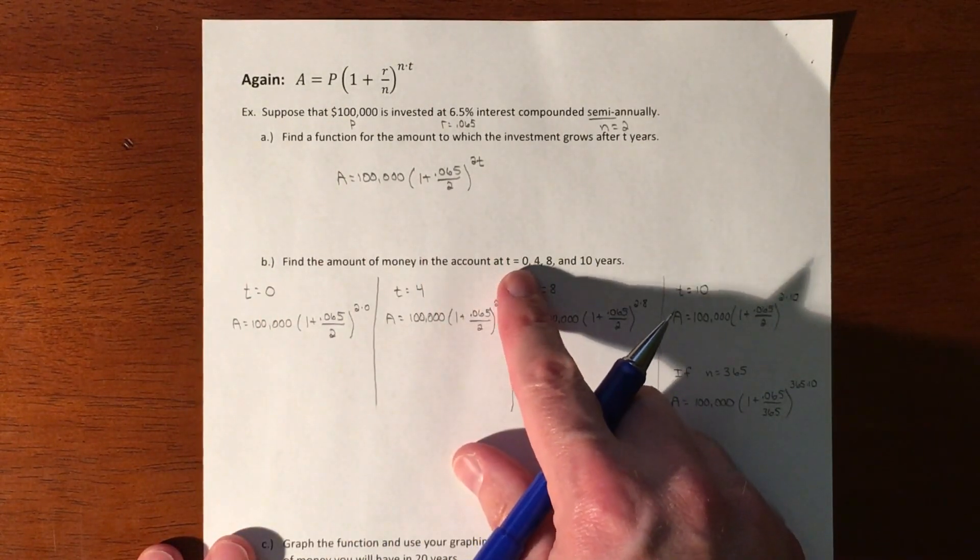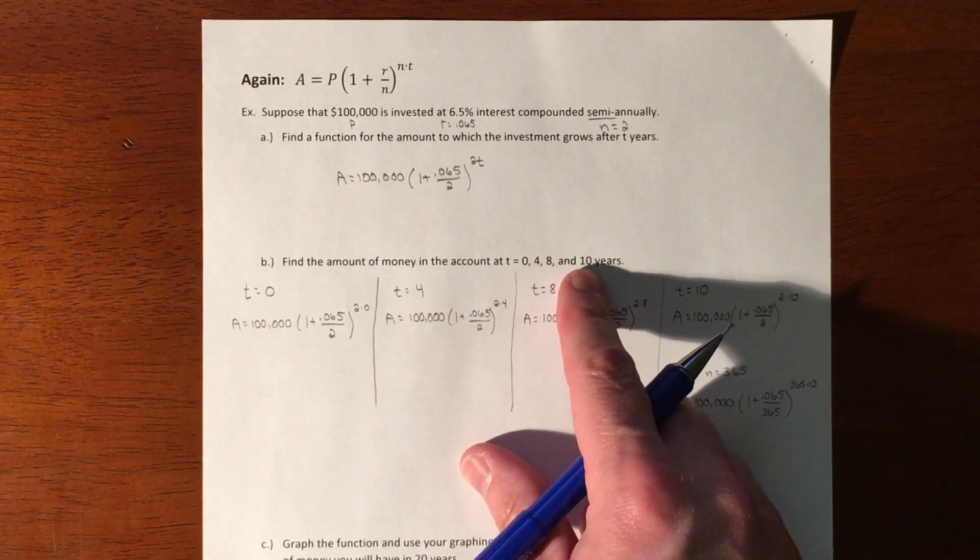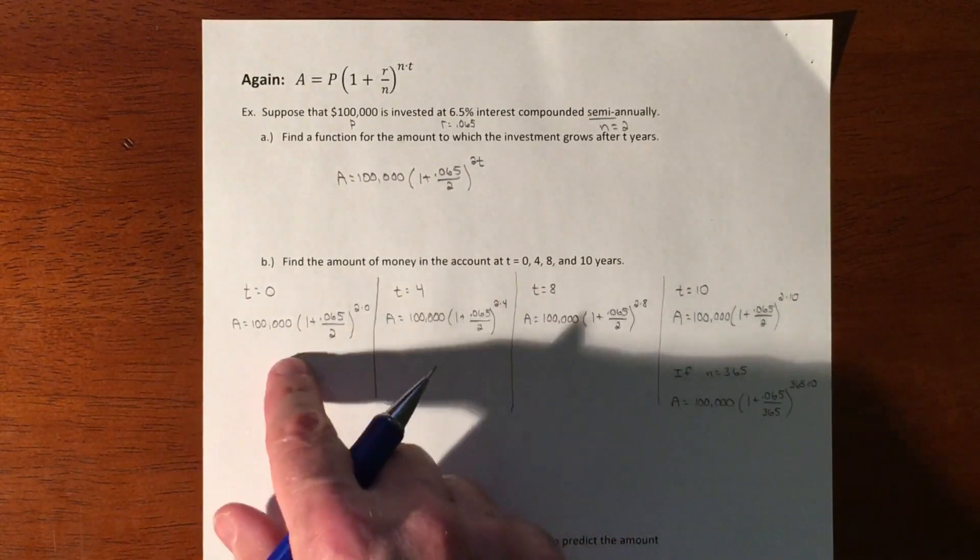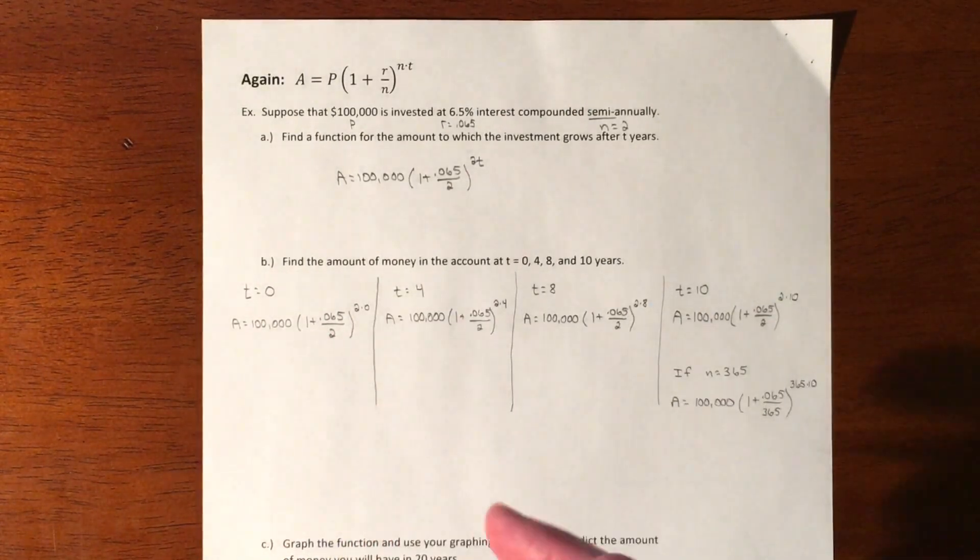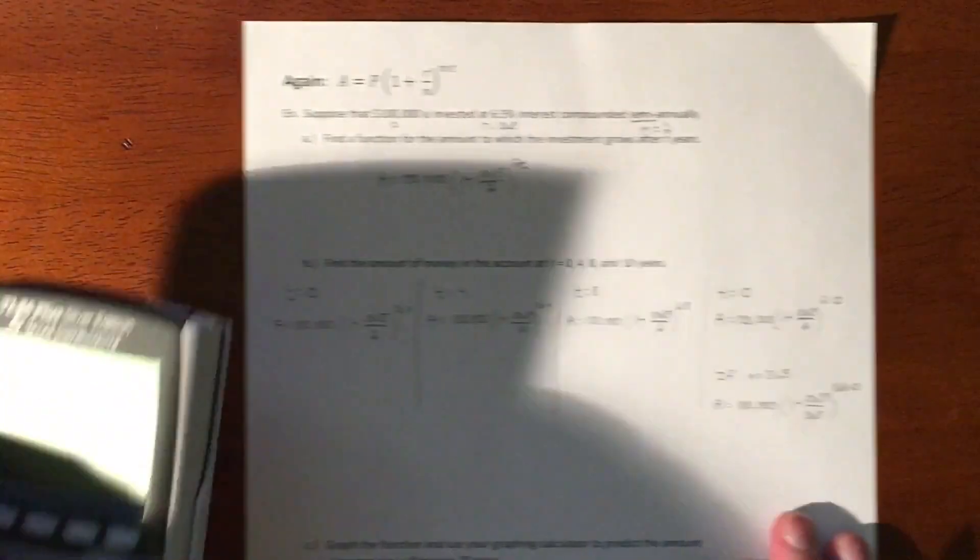Here are our situations: if we put our money in for zero years, four years, eight years, and ten years, we're looking to see how much money we get out of this. I have them all set up, and we're going to throw this into the calculator and see what happens.